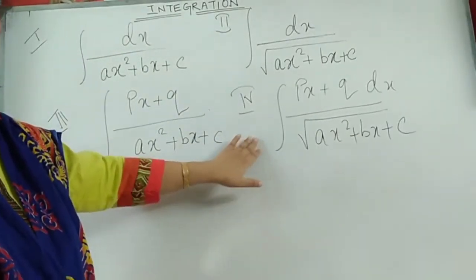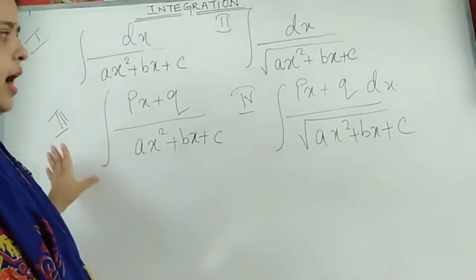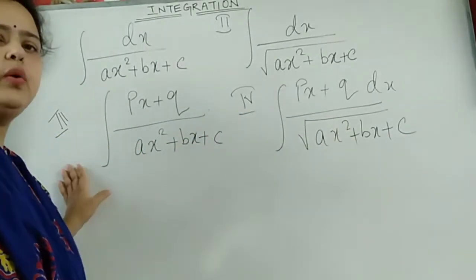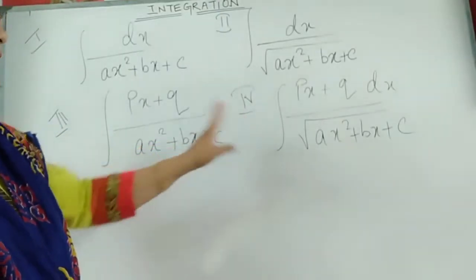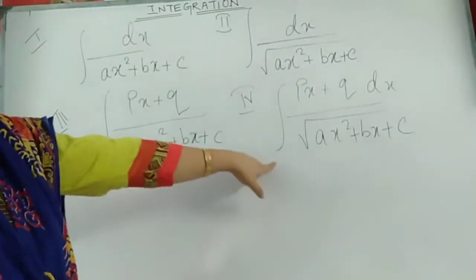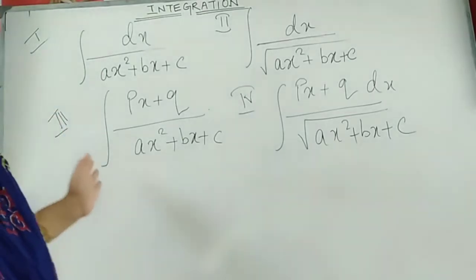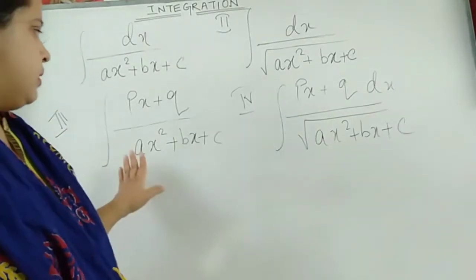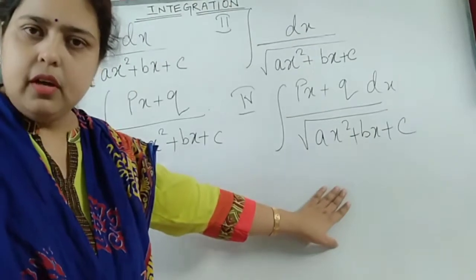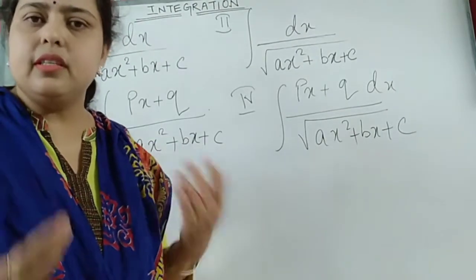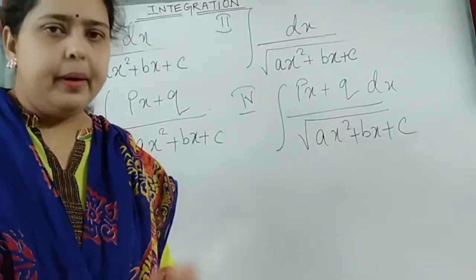I will be starting with the third type first, then moving to the fourth type. The basic difference between the third and fourth type is: in the third type there is no square root in the denominator, whereas in the fourth type we do have a square root, and this changes the formula accordingly.